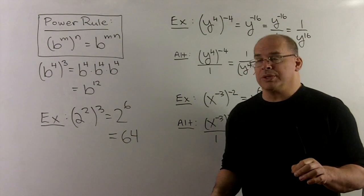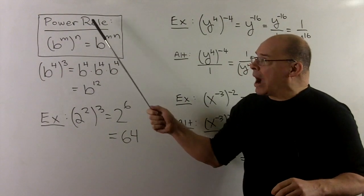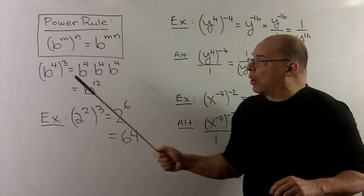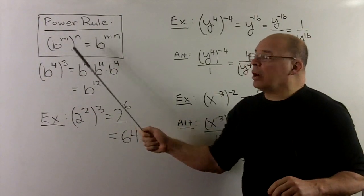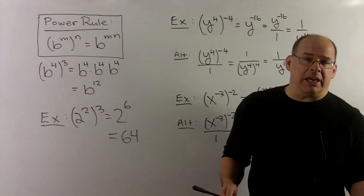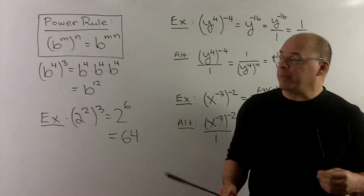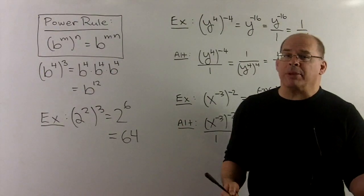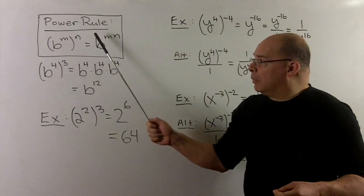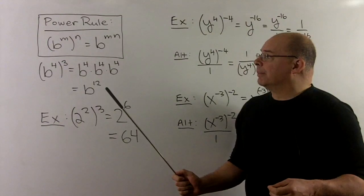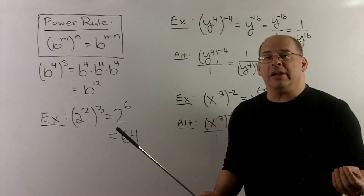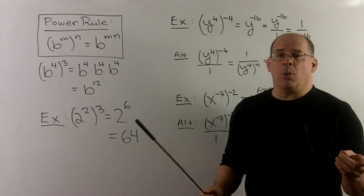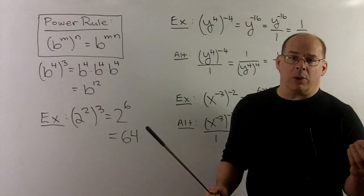Continuing with our exponent rules, we have the power rule. This says if we take b to the nth power and raise that to the nth power, that's the same as if we take b and raise it to the m times nth power. In effect, we're just dropping the parentheses and then multiplying the exponents together. The common error here is not being careful with negative signs, so we'll have examples that show how we work with that.